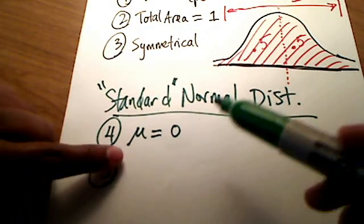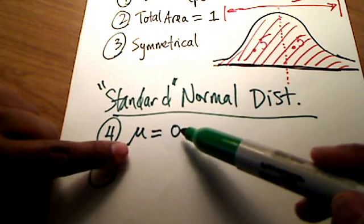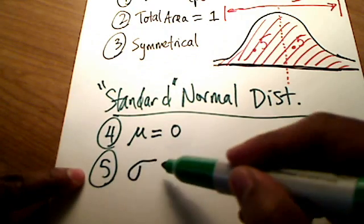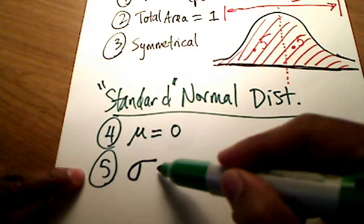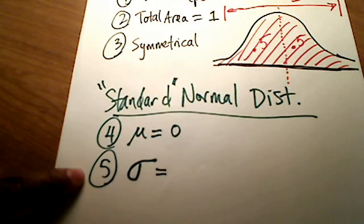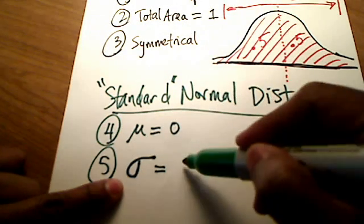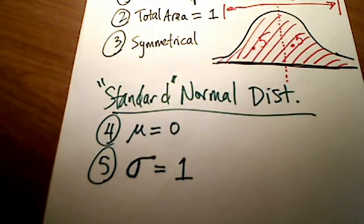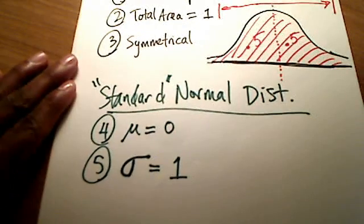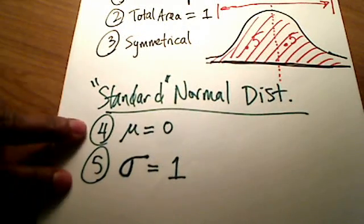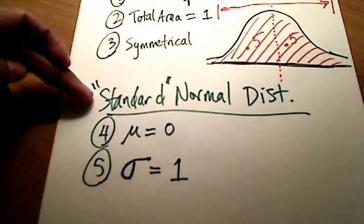And the other thing that it means is that this Greek symbol sigma, which is lowercase sigma, and that means population standard deviation, is automatically 1. So these two things are also part of what the standard normal distribution area is.